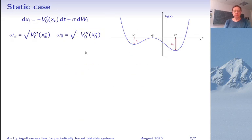Let me recall a few well-known facts of the static case, meaning epsilon is zero or the potential does not depend on Y. Here's my notation for the curvatures of the potential at its stationary points.